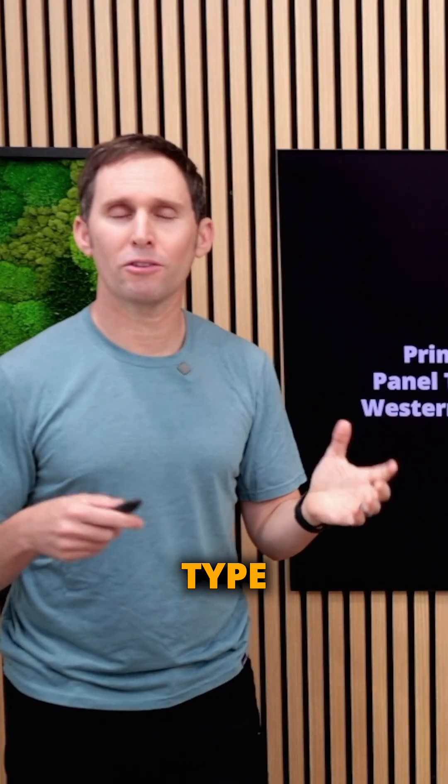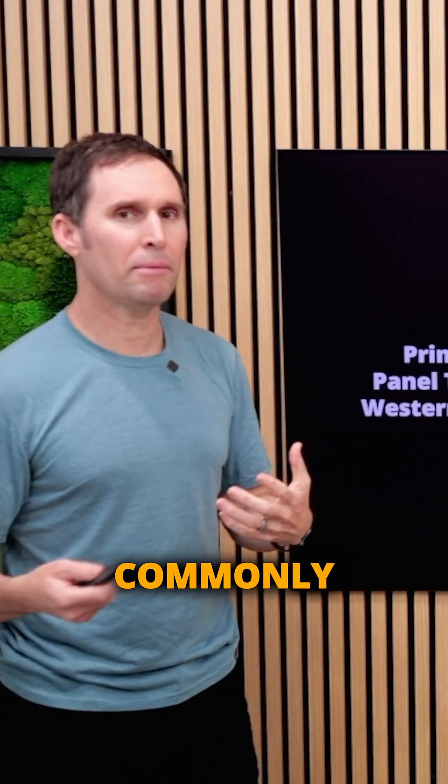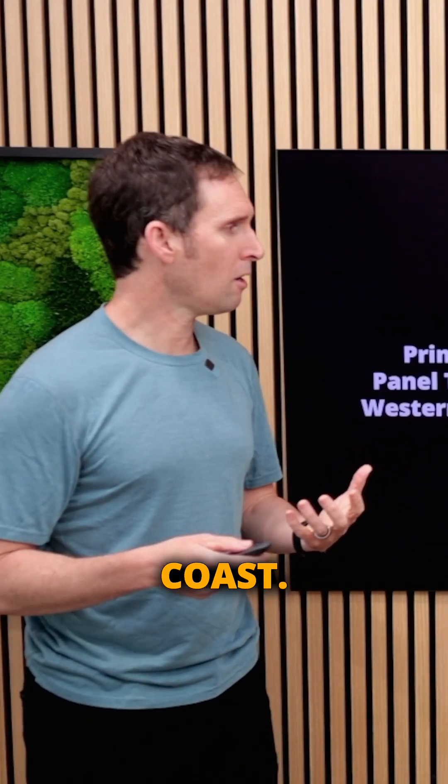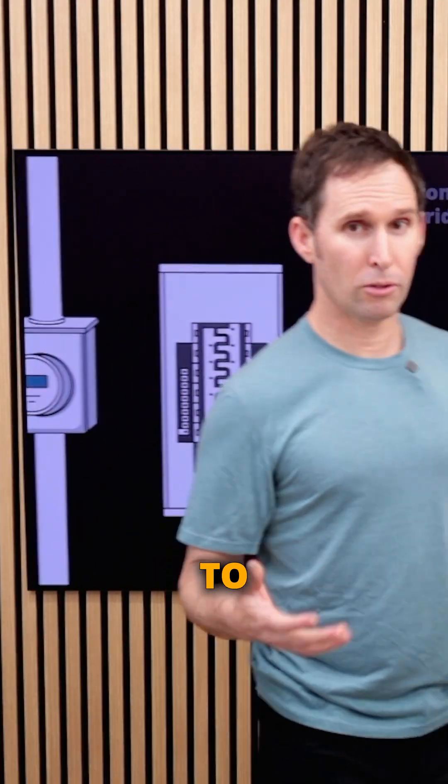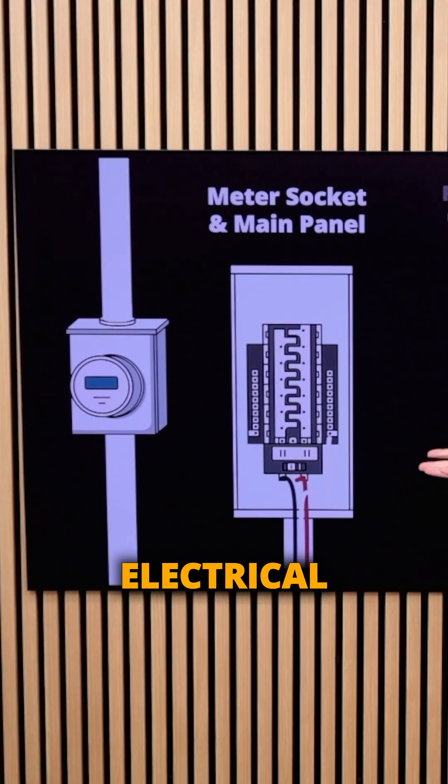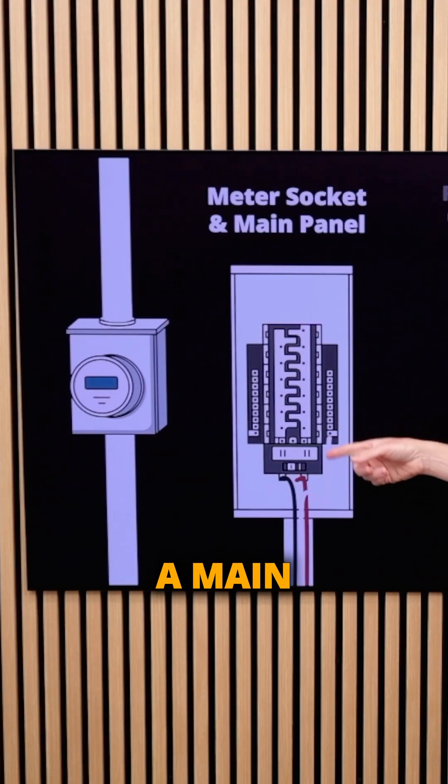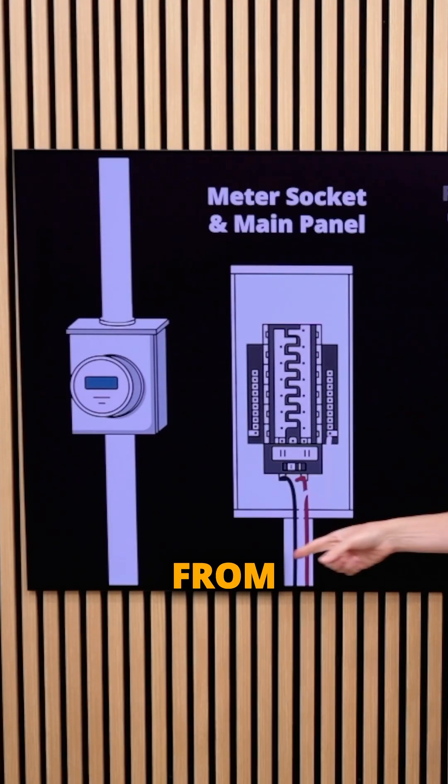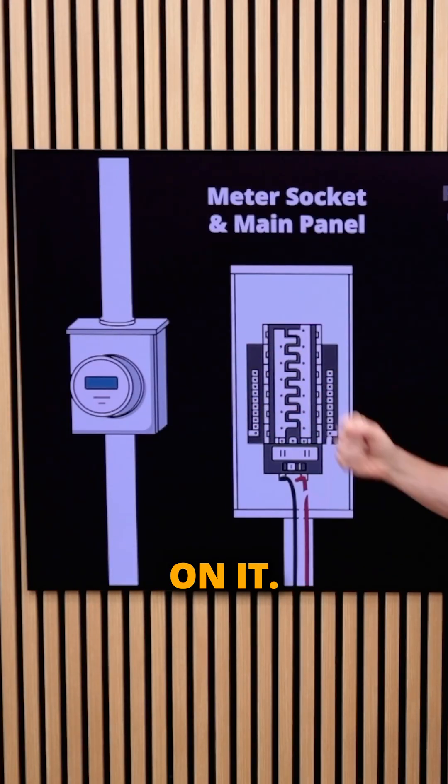Now let's look at that other type of panel you'll see more commonly in legacy homes on the East coast. It looks similar to a sub panel - basically a main electrical panel with a main breaker that's separated from the socket which has the meter on it.